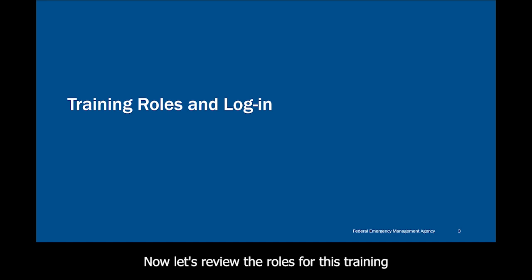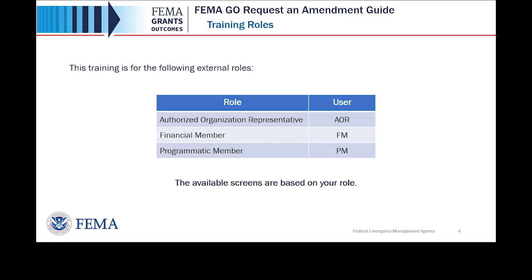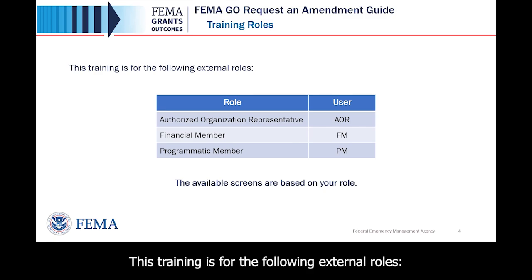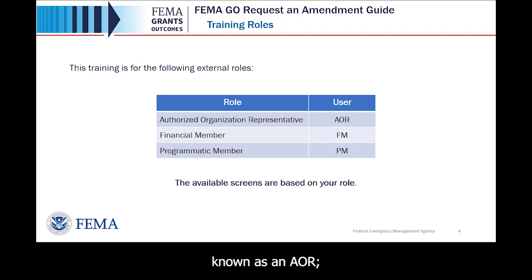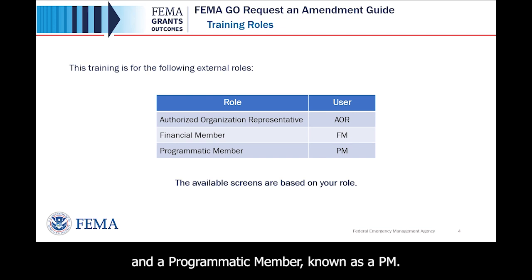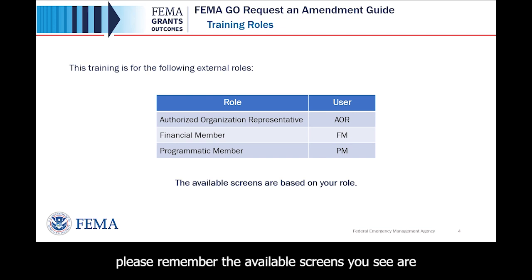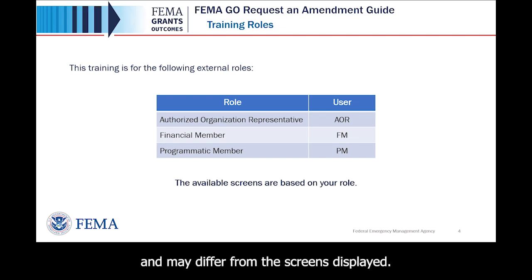Now let's review the roles for this training and how to log in as an external user. This training is for the following external roles: an Authorized Organization Representative, known as an AOR, a Financial Member, known as an FM, and a Programmatic Member, known as a PM. As you go through this training, please remember the available screens you see are based on your role and may differ from the screens displayed.